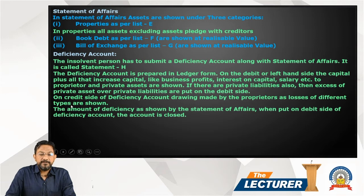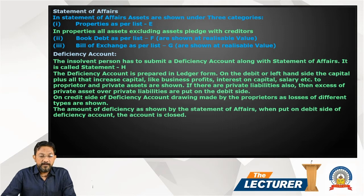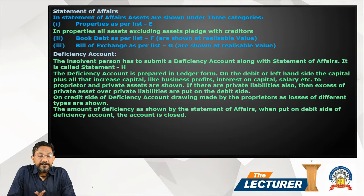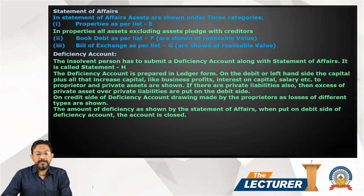On the credit side of the deficiency account, drawings made by the proprietor and losses of different types are shown. The amount of deficiency as shown by the statement of affairs is put on the debit side to close the account. The difference in the statement of affairs is recorded in the deficiency account to close it.